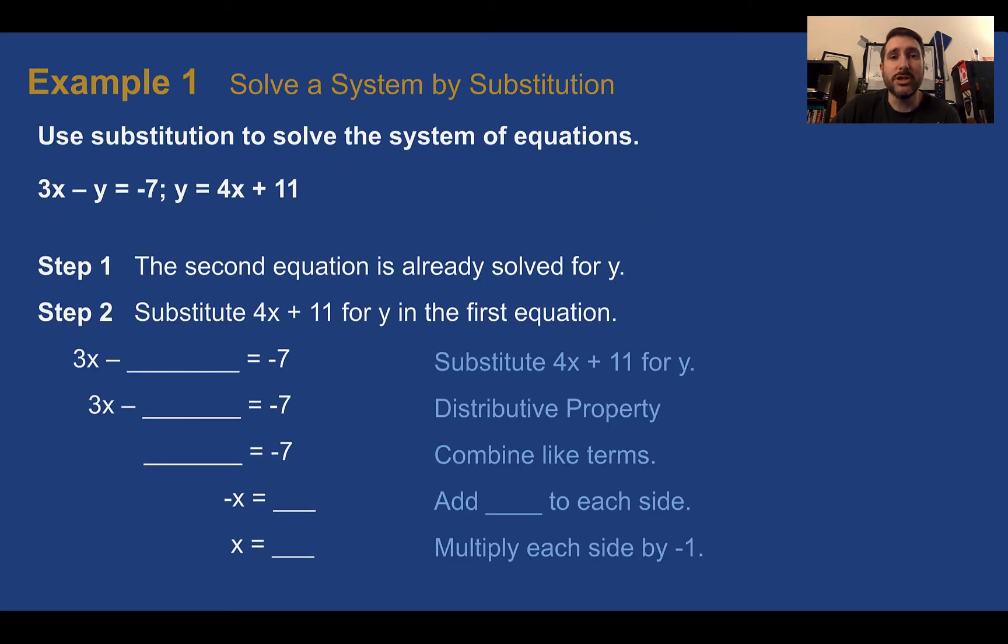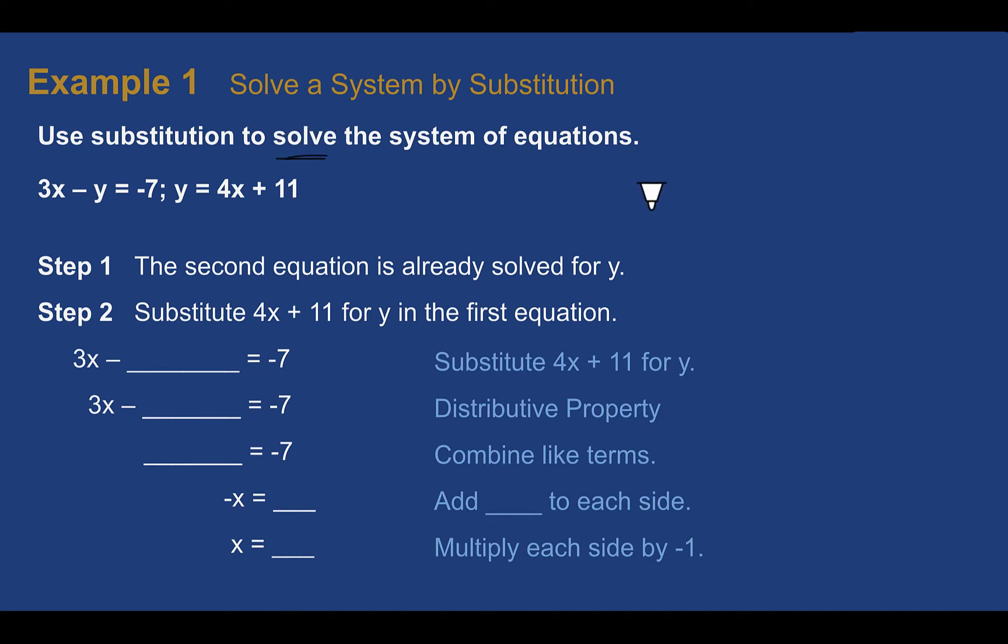Example one. Solve a system by substitution. Use substitution to solve this system of equations. We have 3x minus y equals negative 7 and y equals 4x plus 11. So remember our goal here is to find the solution or to solve a system, to figure out what value of x and what value of y make both equations true at the same time. You can see this equation here is already solved where y is by itself. It's telling you what y is equal to. So what we're going to do is take the second part, what that y value is equal to, and plug it in for y in the first equation.